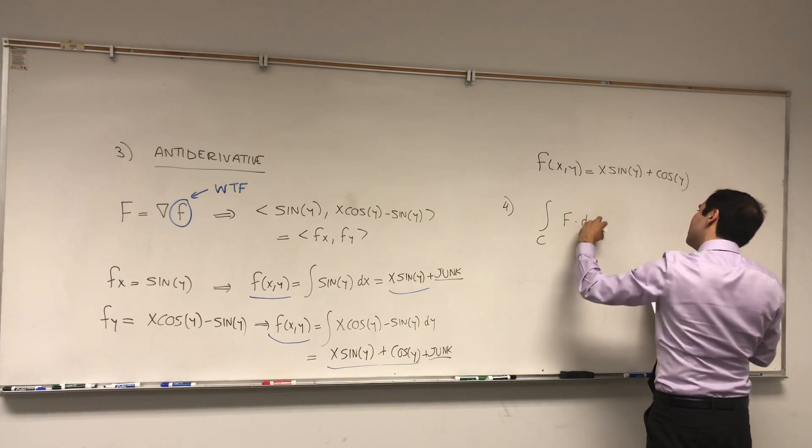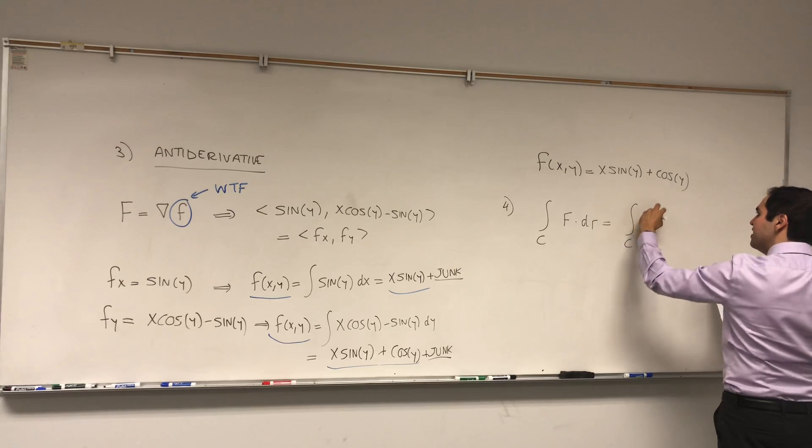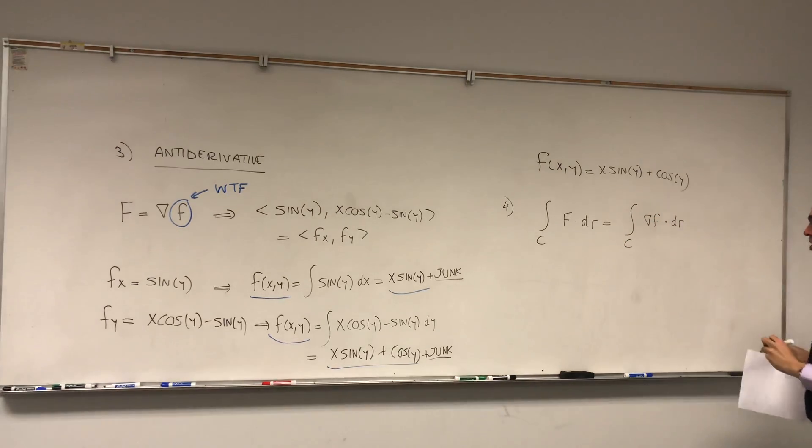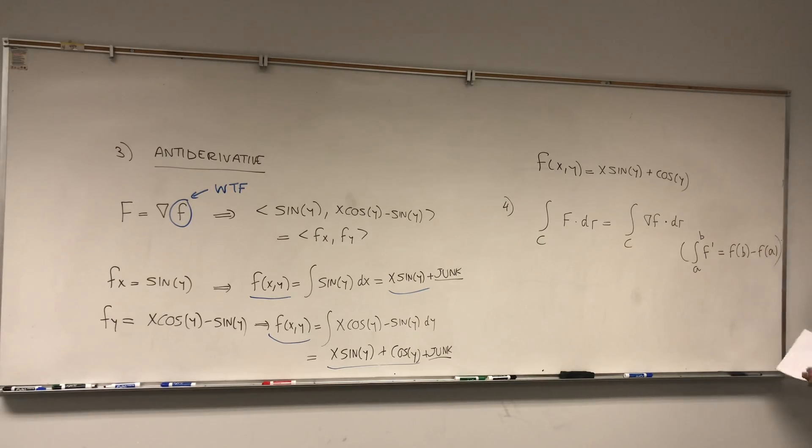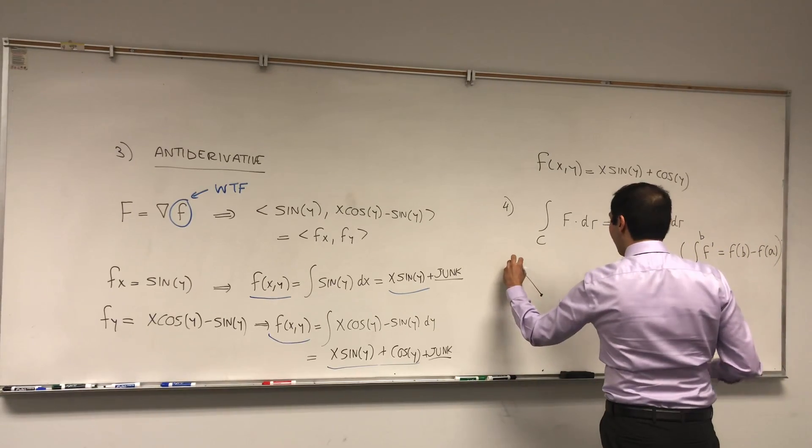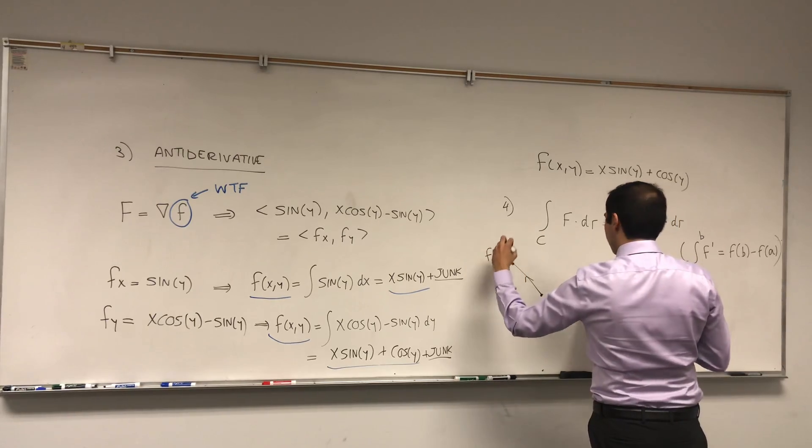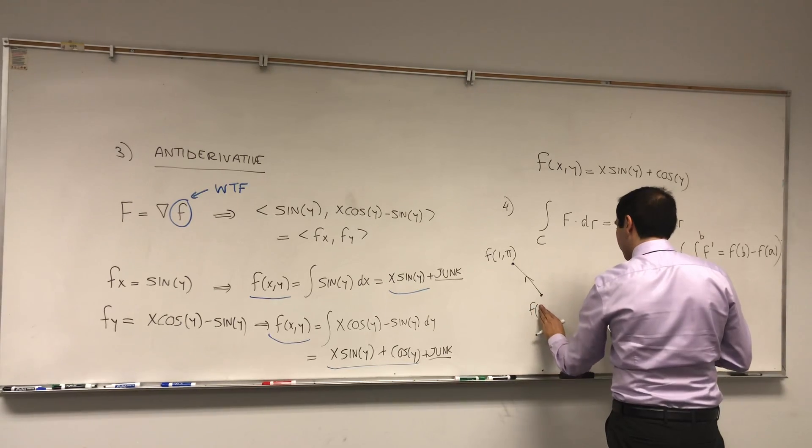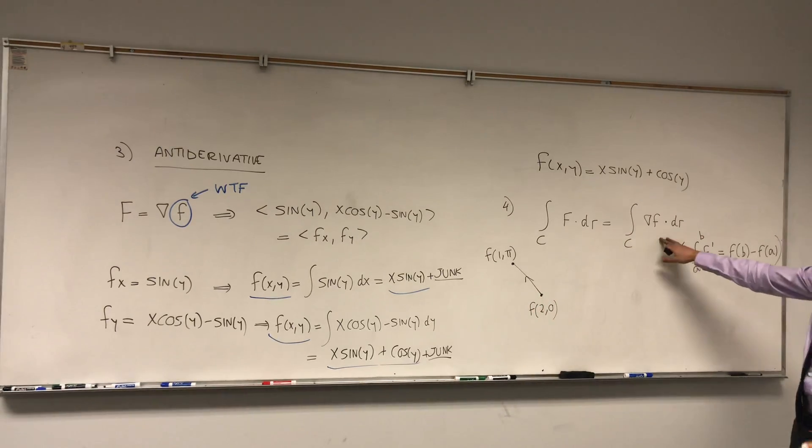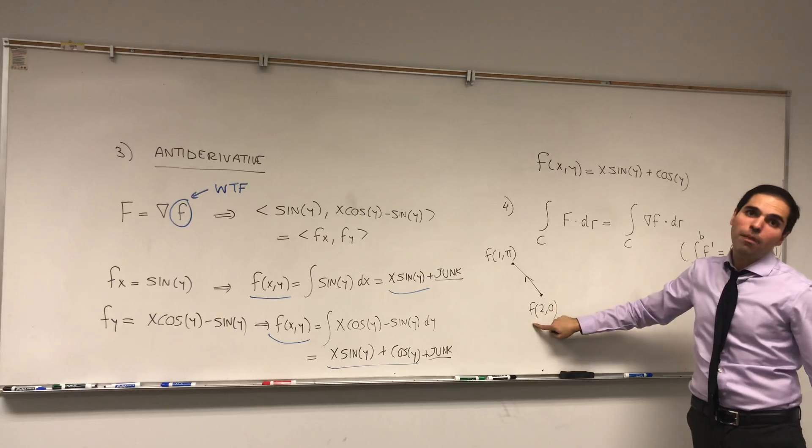So integral of F·dr is, again, the integral here of the gradient of little f dotted with dr. And what's nice is this is almost like saying the integral of F' from a to b, which is just f(b) - f(a). So actually what this becomes—f(b) is like the end point, f(a) is the starting point. So what it is saying is, to calculate this line integral you do f of the ending point, which is (1,π), minus f of the starting point, which is (2,0).